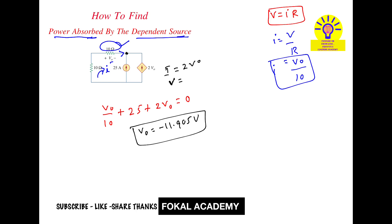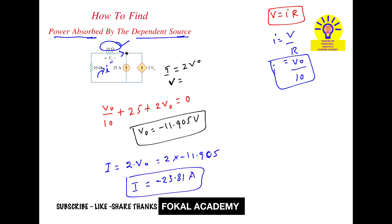This is the voltage drop across the resistor. Doubling it gives the current in the dependent current source, which is 2V0. So the current I in the dependent source is 2 times V0, that is 2 times minus 11.905, which simplifies to minus 23.81 amperes. This is the current of the dependent source.